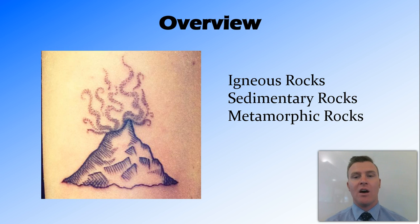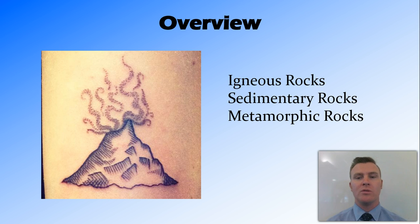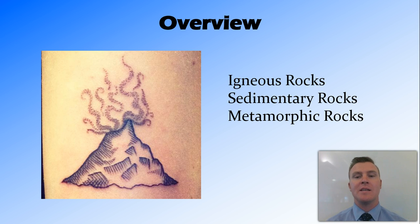So in this video, we have looked at igneous rocks coming from fire when magma or lava from volcanoes cools to form rocks. We've looked at sedimentary rocks, which are formed when small particles called sediments are cemented together. And we've looked at how these two — igneous and sedimentary rocks — can undergo immense heat and pressure to change form into a third type of rock called a metamorphic rock.